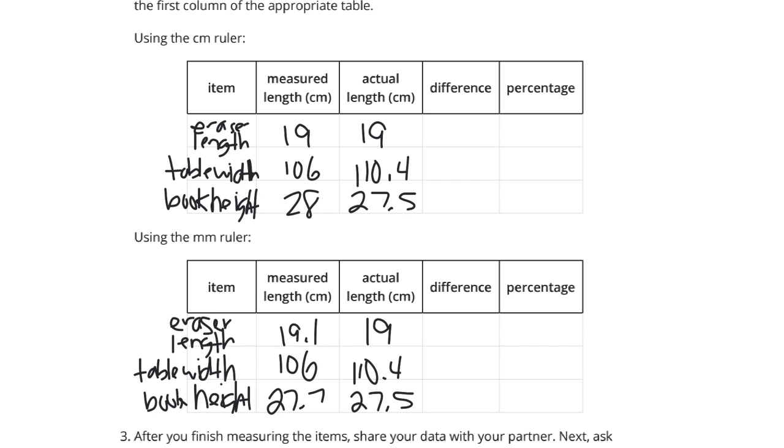The difference here for this column, 19 minus 19, is 0. There's a difference of 4.4 with the table width, and 0.5 with the book height.